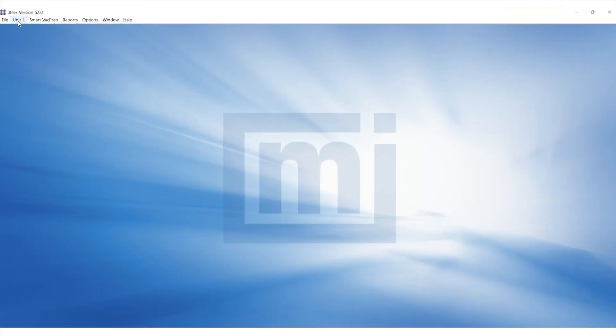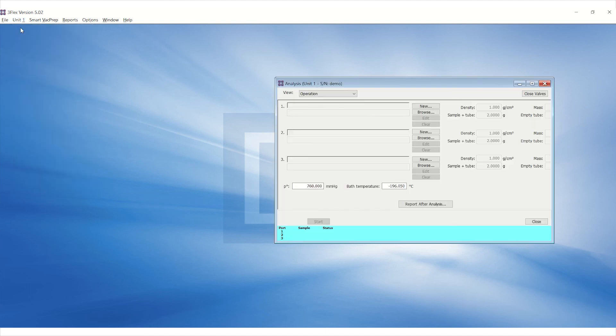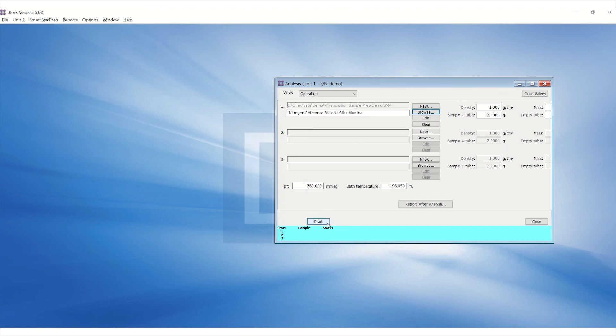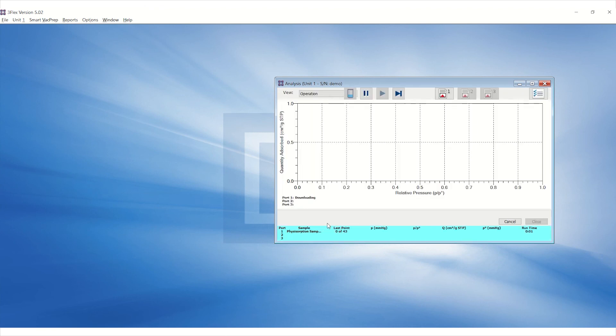go to the unit menu on the 3Flex Microactive software and click on sample analysis. Ensure to load the correct sample files for each port. Click start and next.